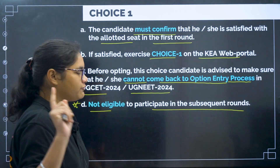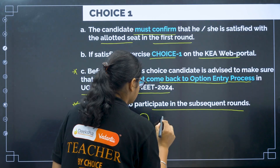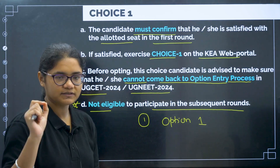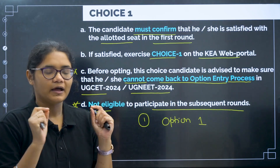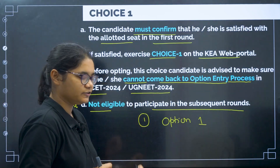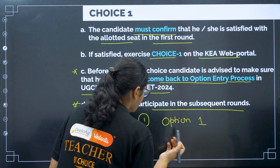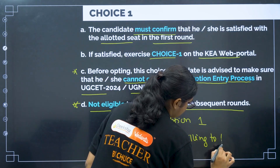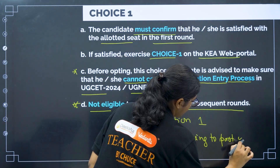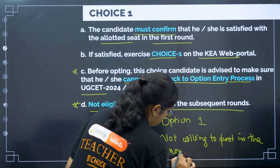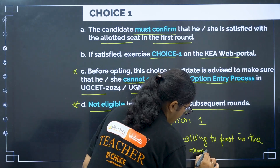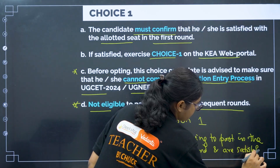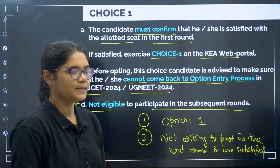So who should select Choice 1? First, candidates who got their first preference allotted and are very happy to join. Second, those who are not willing to participate in the next round and are satisfied with the allotted college. If both conditions apply, you can select Choice 1.